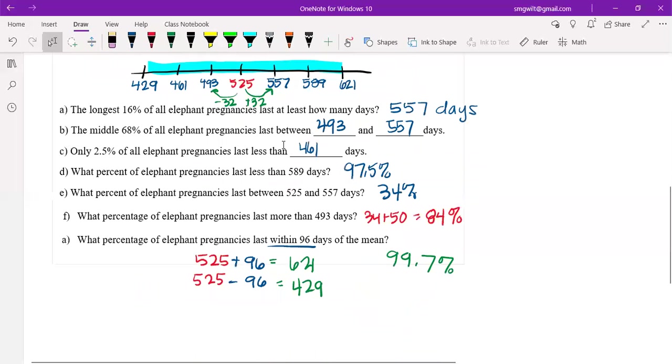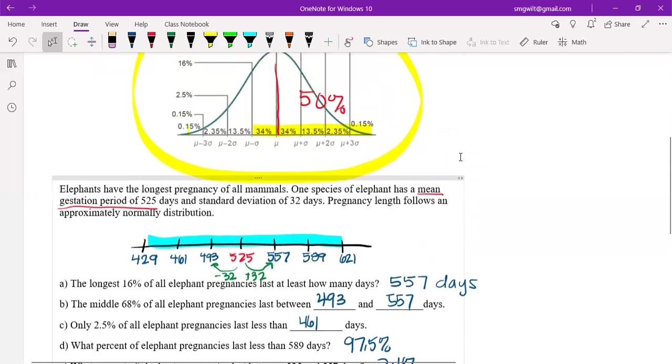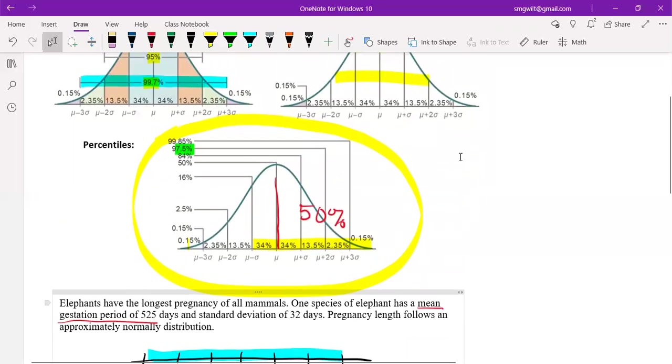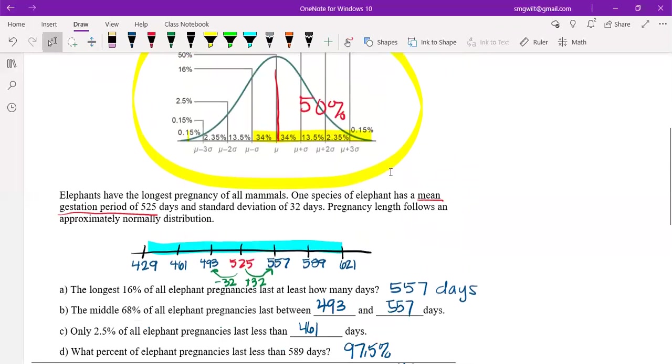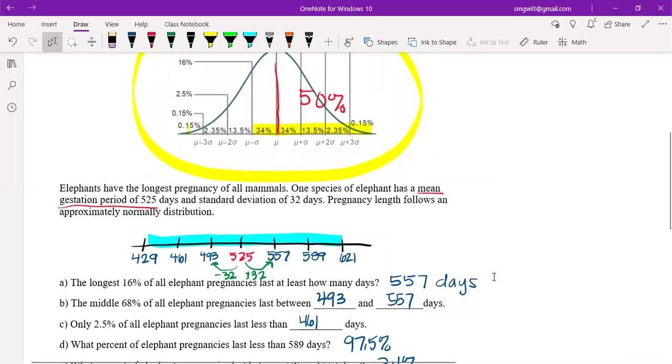So using these graphics and making sure that you have them in your notes is the best way to quickly do these problems because then you can just reference them. And again, my hint is don't draw that curve every time. Just draw yourself a little number line, put the mean in the middle, add and subtract the standard deviation, and then reference that to the other curve. I mean, you could always copy down the percentages each time, but that'll just save you some writing.